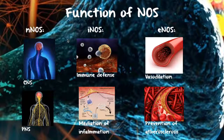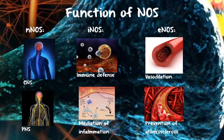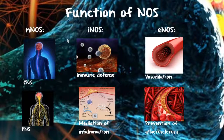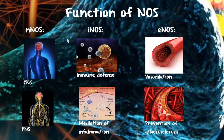Neuronal NOS, or nNOS, is constitutively expressed in the CNS and PNS and other cell types. Its functions include synaptic plasticity in the CNS, central regulation of blood pressure, smooth muscle relaxation, and vasodilation. Inducible NOS can be expressed in many cell types and generates large amounts of NO that affect parasitic target cells, contributing to the pathophysiology of inflammatory diseases and septic shock.